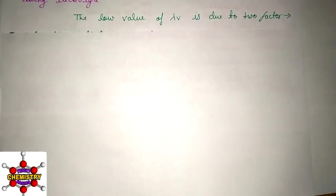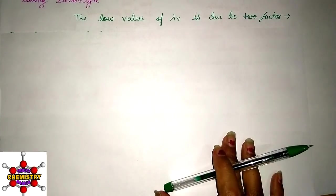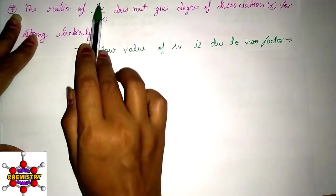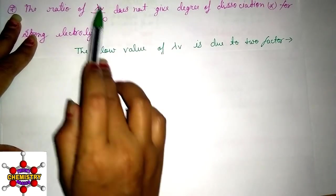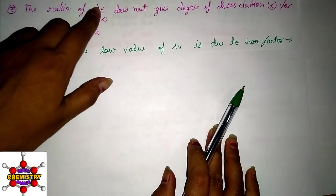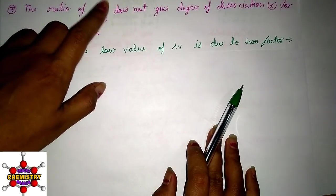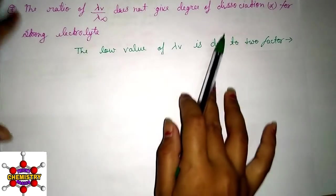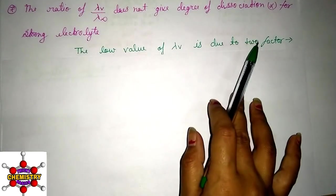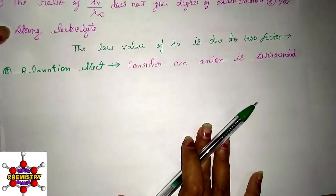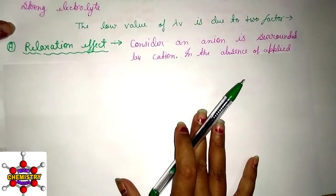The value of lambda-V is less than lambda-infinite due to two main factors that lower the mobility of ions in strong electrolytes. The first is the relaxation effect, and the second is the electrophoretic effect.